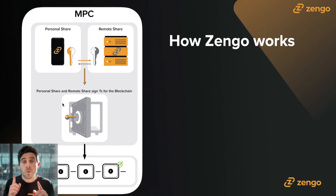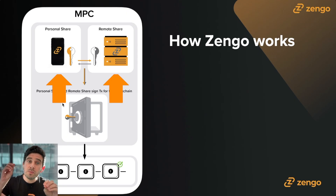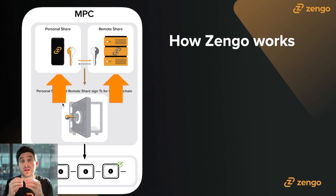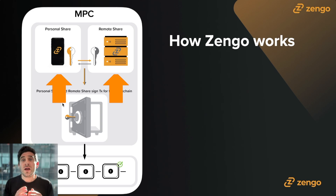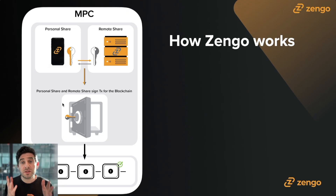After you download the app, one thing happens in two locations simultaneously in different ways. Your personal share is generated on your mobile device and your remote share is generated on the Zango server. The two shares are then locked and cryptographically linked and secured to make sure that a hacker, if they try to inject some code or inject some communication, aren't able to. This ensures that the two shares can speak with each other.